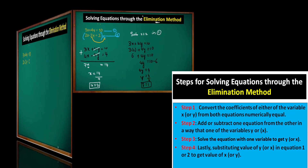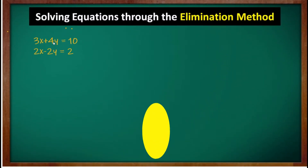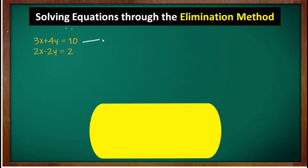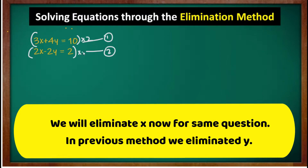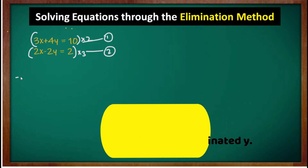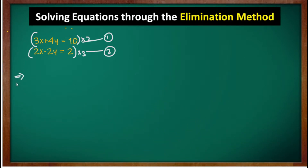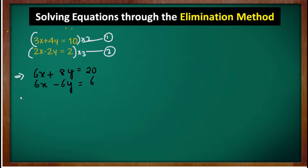Now we solve the same pair of equations by eliminating x instead. Equations: 3x + 4y = 10 (first) and 2x - 2y = 2 (second). To make x coefficients equal, multiply the first equation by 2 and the second by 3. This gives: 6x + 8y = 20 and 6x - 6y = 6.